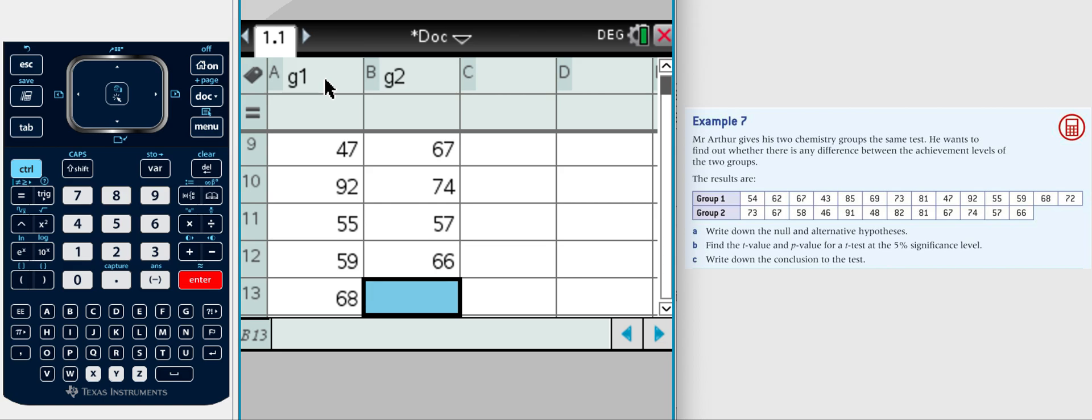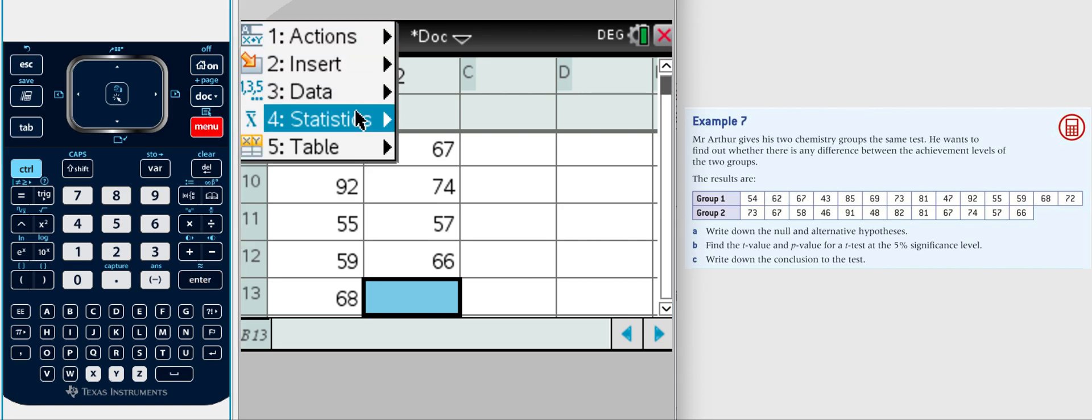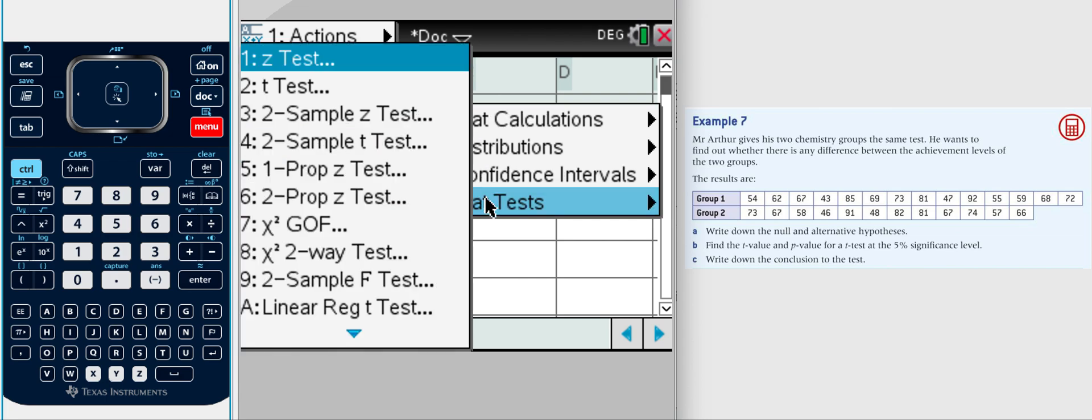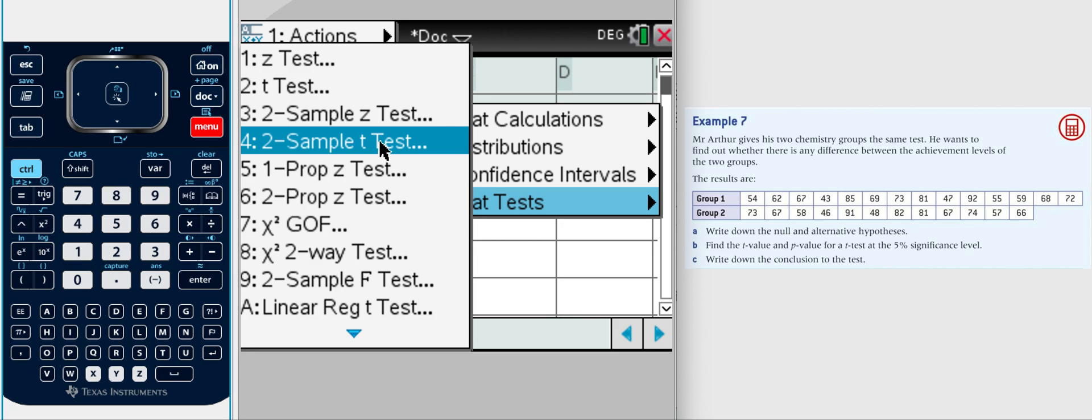We're going to carry out a t test. We want to find the t value, so we're going to go to menu and we are going to be doing statistics, and we're going to do a stat test like last time. But the big difference is now we have two groups, two samples, so we're not going to use number two this time. We're using number four, the two sample t test.